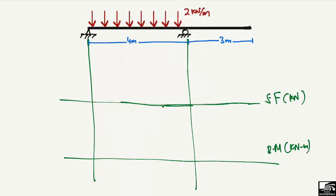Starting the shear force diagram from zero: the reaction at A is 4 kN acting upward, so we bring the shear force up to +4 units. Then there is a UDL of 2 kN per meter acting downward on the beam.